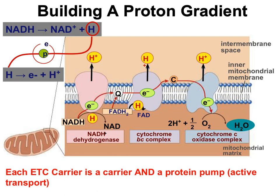The electron transport chain's job is to make a proton gradient, not to make ATP just yet. To make the proton gradient, the proteins in the chain need to do two things: first, be an electron transporter, moving the electrons from one transporter to the next; second, some of the electron transporters need to be proton pumps. You can see three spots in the electron transport chain where the transporters are also proton pumps — the first, third, and fifth carriers are all carriers and proton pumps, transporting protons from the mitochondrial matrix to the intermembrane space.